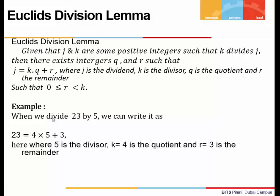We'll take one example. If we divide 23 by 5, we can see that 23 can be written as 4 times 5 plus 3, where 5 is the divisor, 4 is the quotient, and 3 is the remainder. 3 is less than 5, so the remainder is less than the divisor and it is positive.